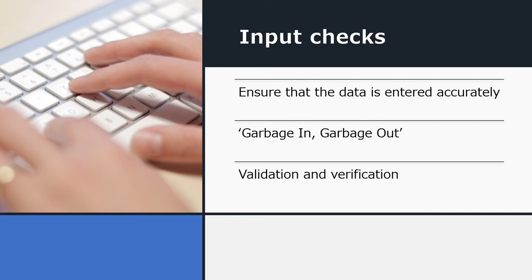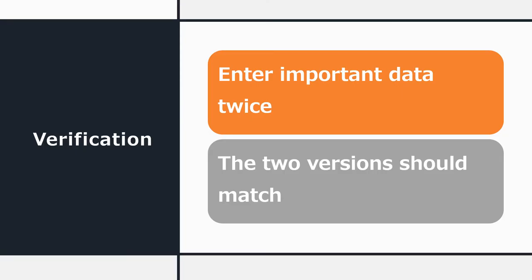Quite often in a transaction we have to input some data, and if that data is input incorrectly — for instance accidentally spelling your own name wrong — you end up with data that can't be used properly. There's a computer saying: garbage in, garbage out, meaning if you put garbage into your database the results will be worthless. A couple of ways to screen out errors before they get into the database are validation and verification.